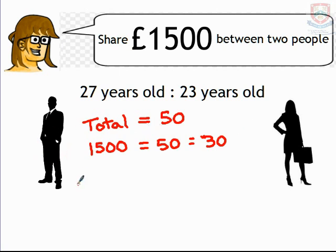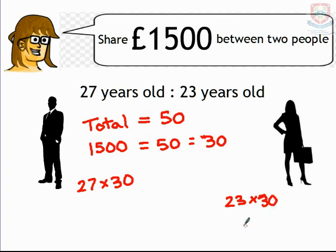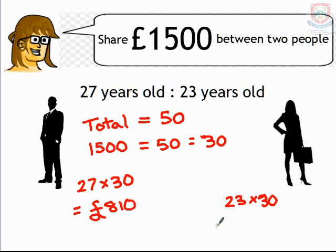So the person on the left is 27 years old, so he'll receive 27 lots of £30 — so £30 for every year he's been alive. The person on the right will receive 23 lots of £30. So if we now work this out, 27 times 30 will give us £810, and then 23 times 30 will give us £690.